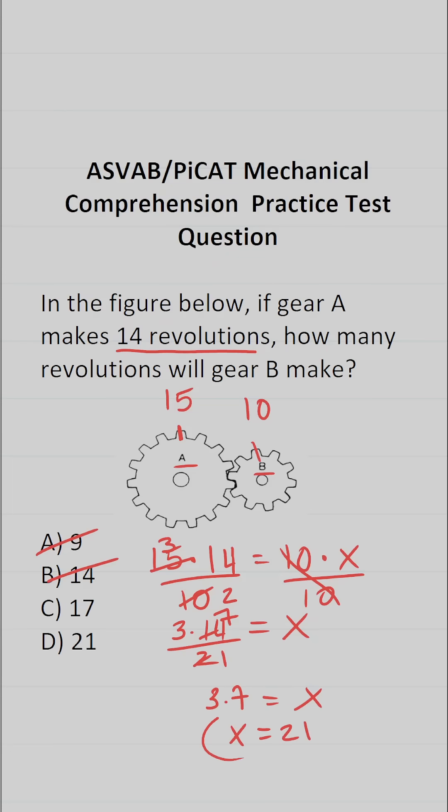So we know X is going to be 21. In other words, gear B is going to make 21 revolutions.